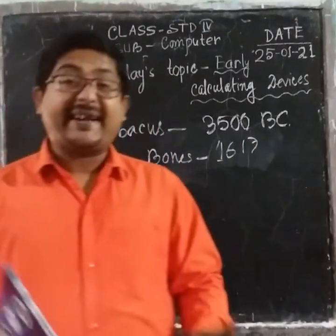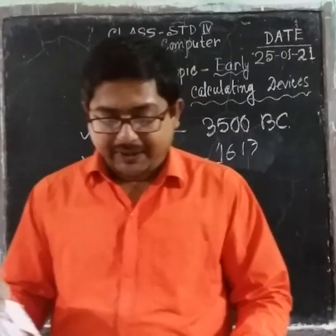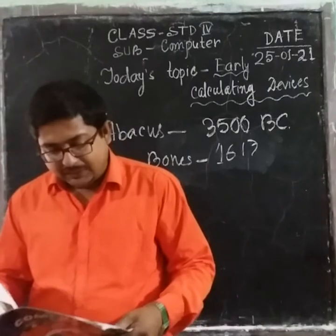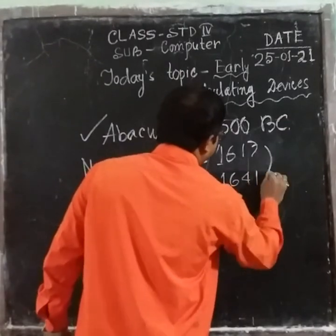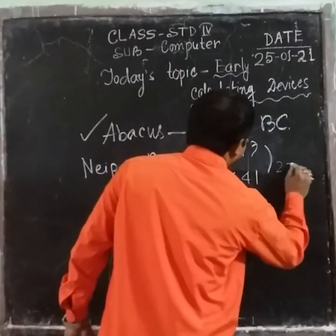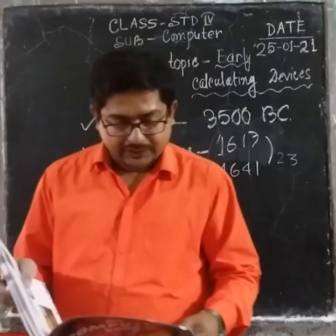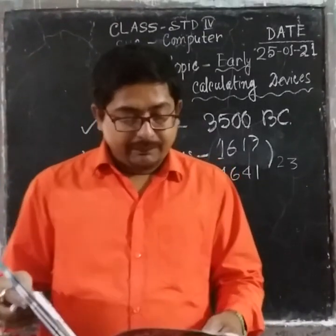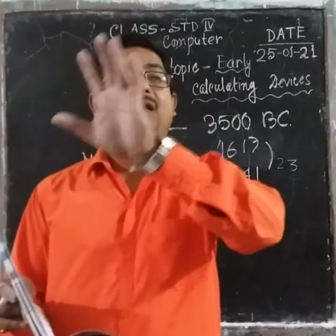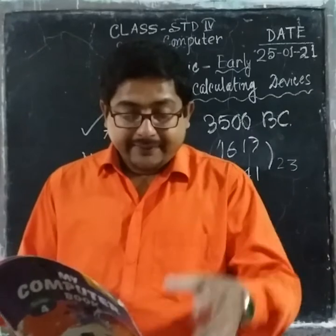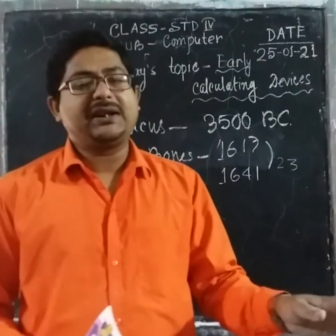Next came Pascaline. The first mechanical calculator was invented by Blaise Pascal in 1641 — that is 23 years after Napier's Bones. It consisted of a rectangular box with eight movable wheels. It is capable of performing addition and subtraction only — no multiplication and no division.